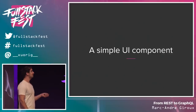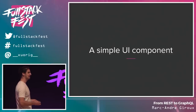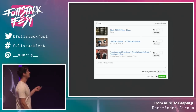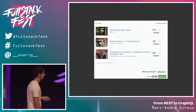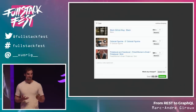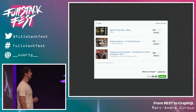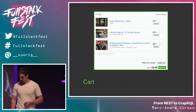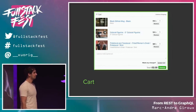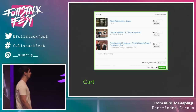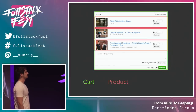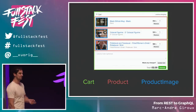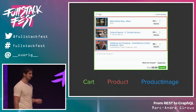I want to start with a simple UI component and walk through how we could get data to populate it. For example, this is a shopping cart in the GitHub shop. It's pretty simple, but we still need a lot of data to render all this. We have a cart resource with a total and products, and the products themselves with a title, description, price, and a product image that contains the URL and any metadata we need.